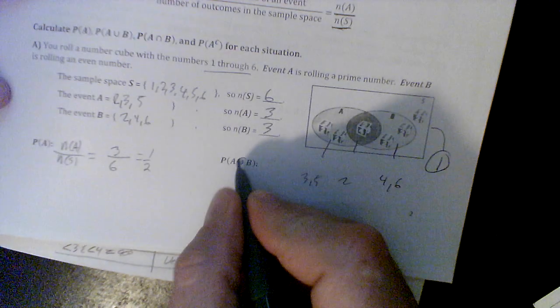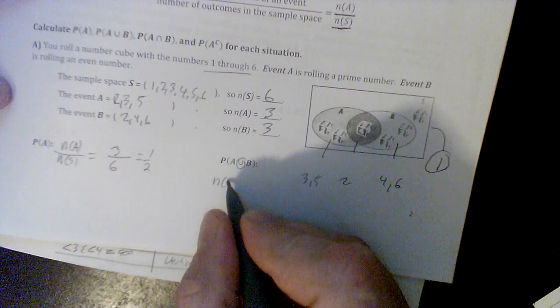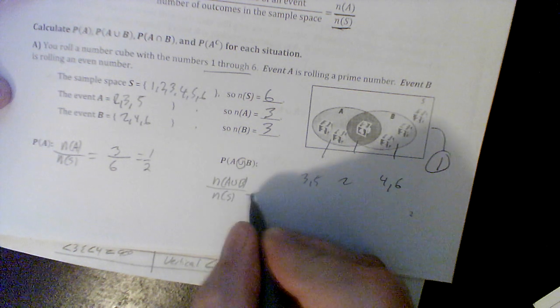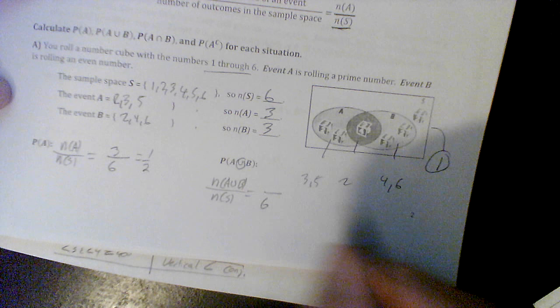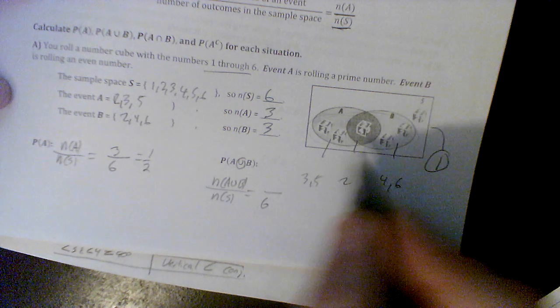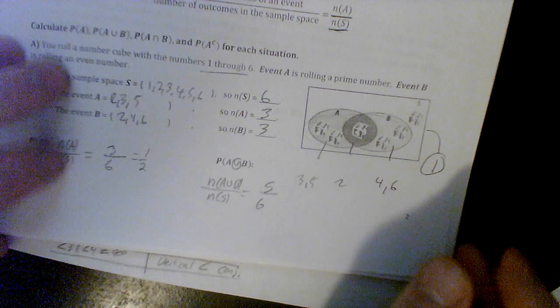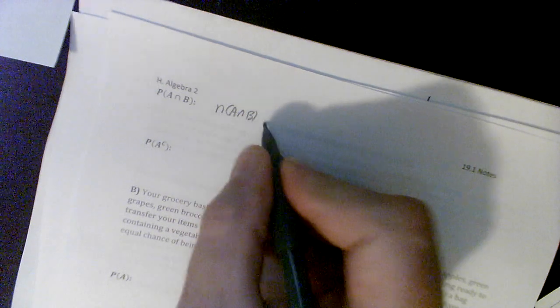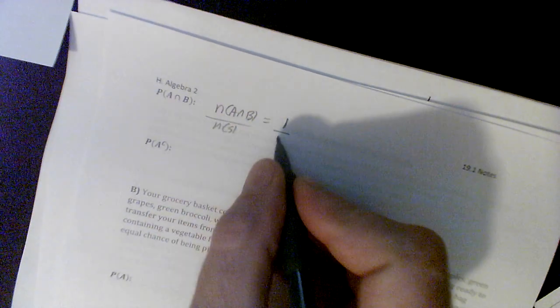The probability of A union B, that's the number of A union B over the number of the sample set. The number of the sample set is still 6, but A union B is everything in both, so that's 5. This one's different, this is A intersect B, so that's the number in A intersect B, which we know is just the number 2, so there's only one of them, and the number of the sample space is equal to 6.